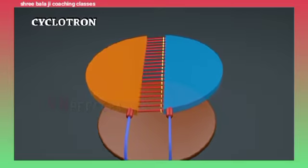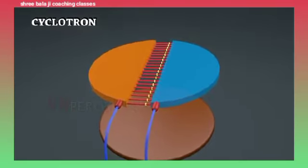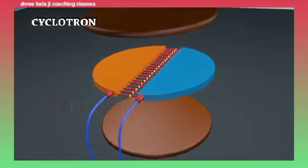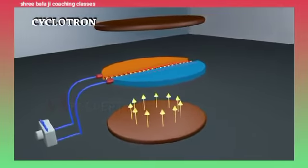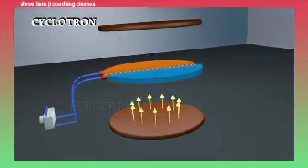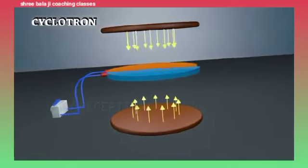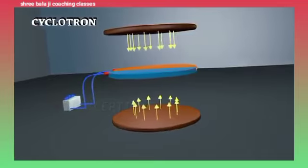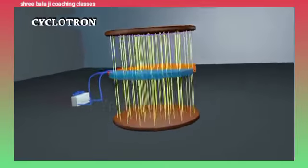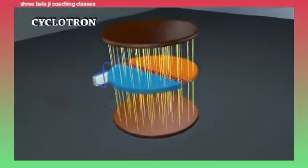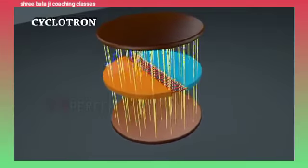One electromagnet is kept below the two D's and one electromagnet is kept above the D's. Bottom electromagnet will have north pole above and top electromagnet will have south pole below. This would create a magnetic field perpendicular to the direction of the electric field.